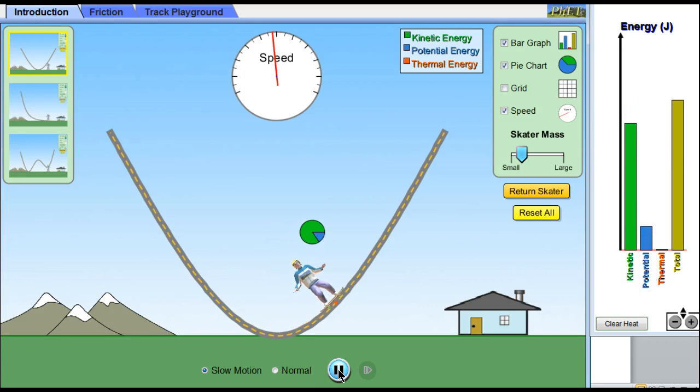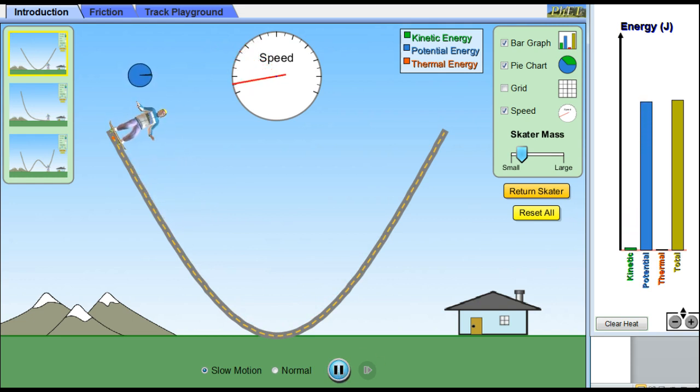On the way up, we're going to do exactly reverse. Notice the pie chart becomes blue and we get potential on the bar chart. So it's just an interchange between the two forms. Again, this is slow speed, so it's not exactly how fast it would happen if we were really watching the person do that.